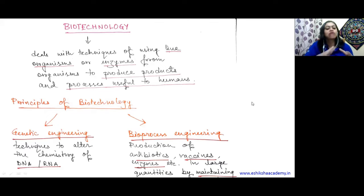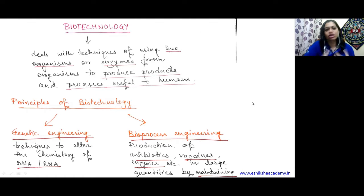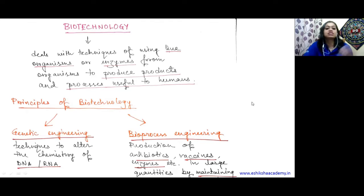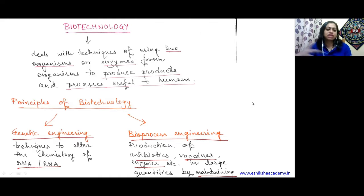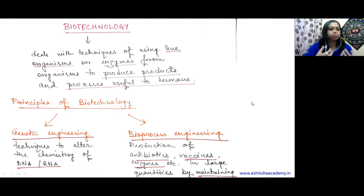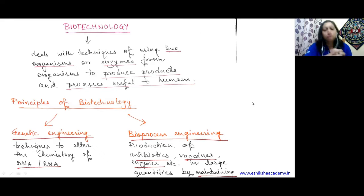Biotechnology involves live organisms and their enzymes. We can make alterations in organisms which are good for them, or we can get commercial products. For example, if we want to extract an enzyme from any living organism, that also comes under the sector of biotechnology. It deals with techniques of using live organisms or enzymes from organisms - be it bacteria, plant cells, or animal cells - to produce products and processes useful to humans.